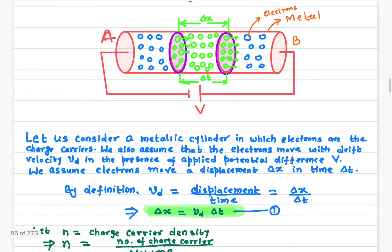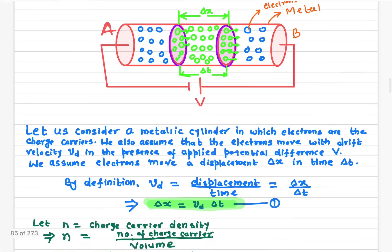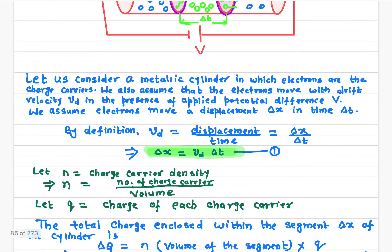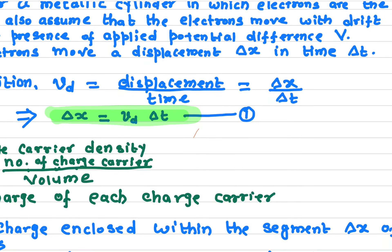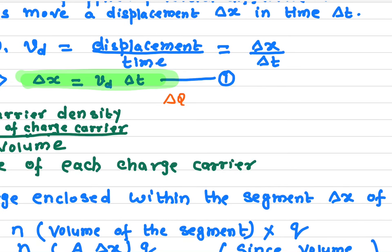Our goal is to find the charge that has traveled across this segment — how many charges have crossed? We call this delta Q. Delta Q is the charges that have passed through this area. To know that, we need the charge carrier density n, multiply by the volume, and multiply by Q, the charge of each carrier. N times volume gives the number of charge carriers, and multiplying by Q gives the total charge.